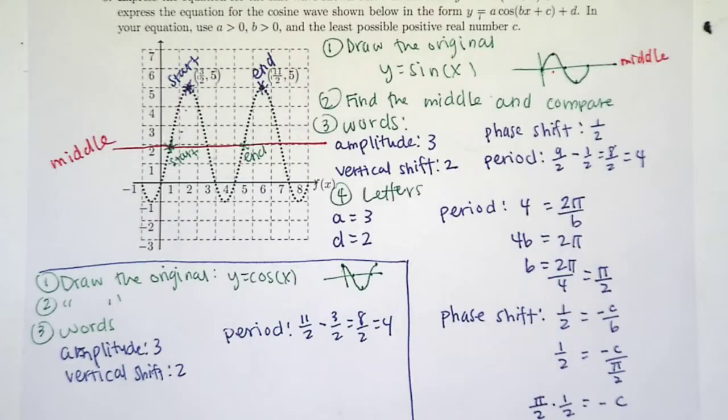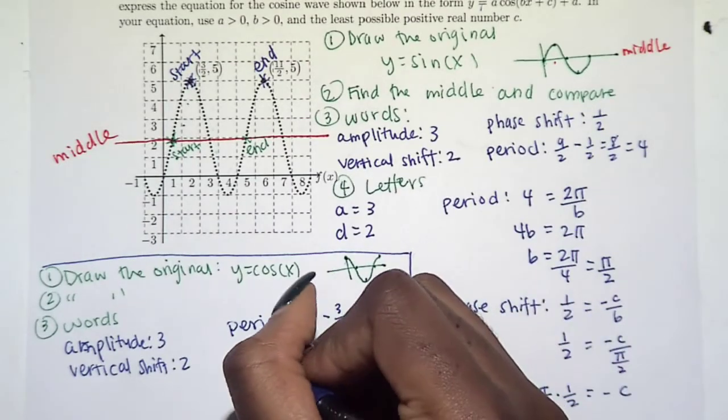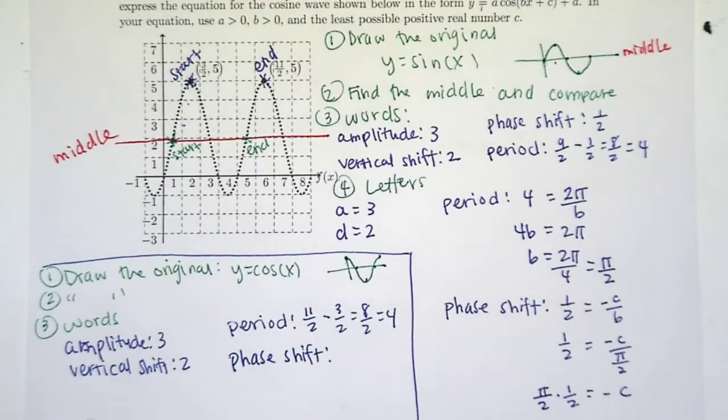The only difference, so basically all of these numbers are exactly the same. The only difference is going to be our phase shift. This horizontal shift, that's the only difference between sine and cosine.